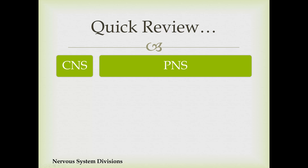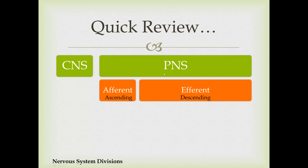As a quick review, we can divide the nervous system into the central nervous system, which is the brain and spinal cord, and the peripheral nervous system, which is all the rest of the nerves in your body outside of the brain and spinal cord. We can then divide the peripheral nervous system into an afferent branch, which is ascending—neurons running from the body and taking information up to the brain—and then the efferent or descending division, which takes commands from the brain and passes them down to the body.